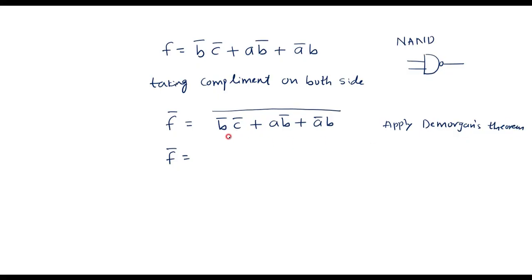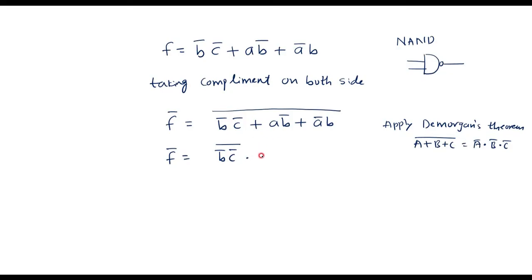We know that (a + b + c)̄ can be represented as ā · b̄ · c̄. So similarly, here I can apply De Morgan's theorem: b̄c̄ bar, I will keep as it is, dot — this is one term — ab̄ whole bar, dot āb whole bar.